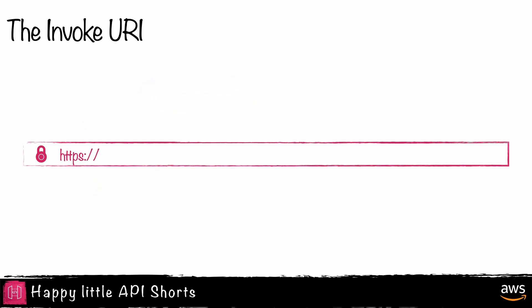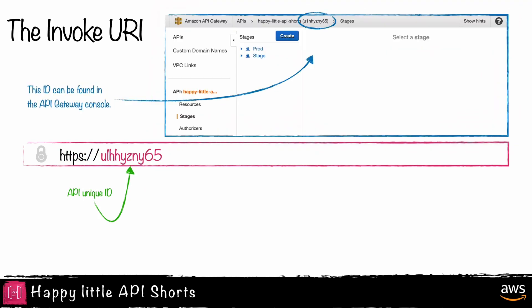The second part of the Invoke URL is the unique ID of the API. This ID can be found in the API Gateway console.